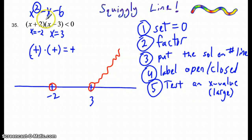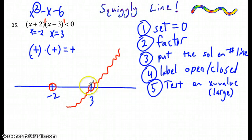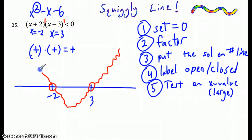Now look at the exponents of the factors — both exponents are 1, which means they're odd, so the graph is going to go right through. In most homework cases you're going to go right through. It has to touch both negative 2 and 3 on the x-axis, make its way back up, go through, and that's your graph.